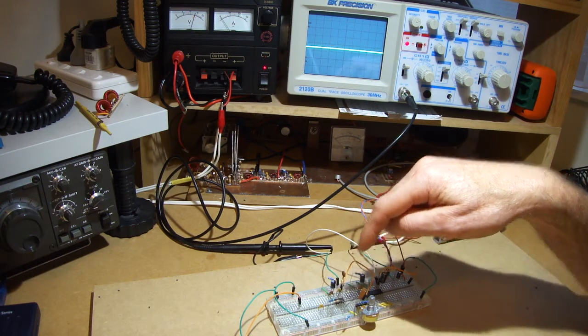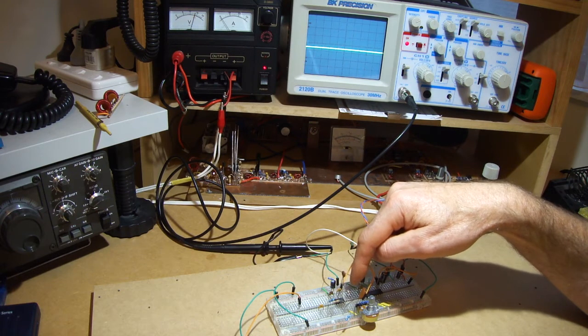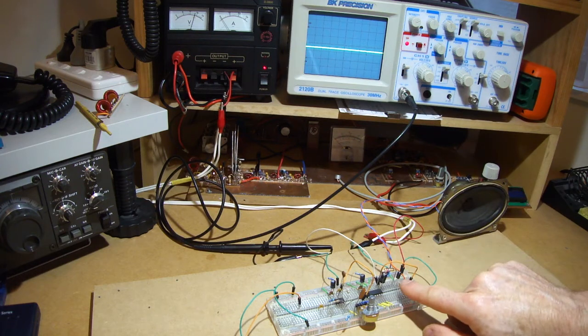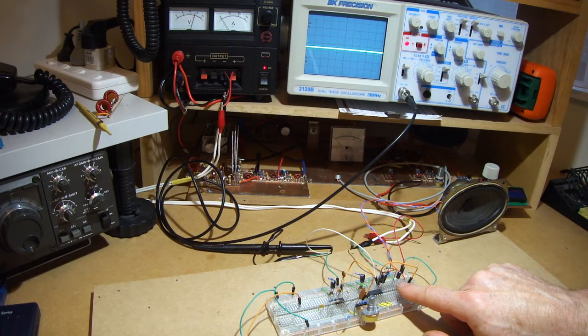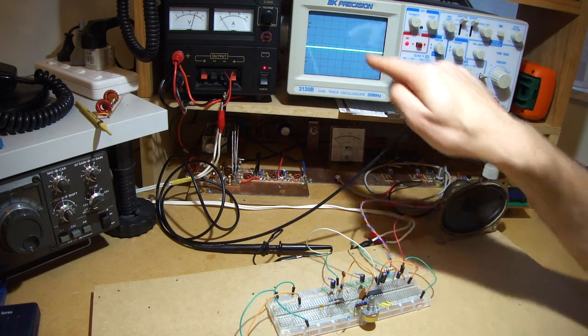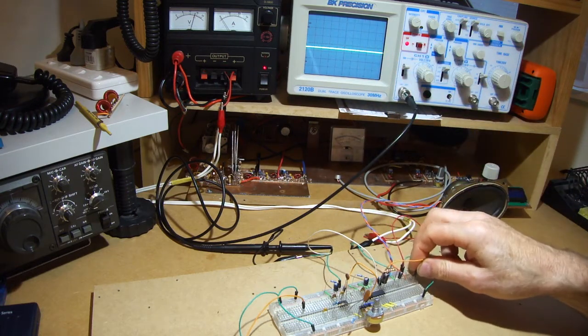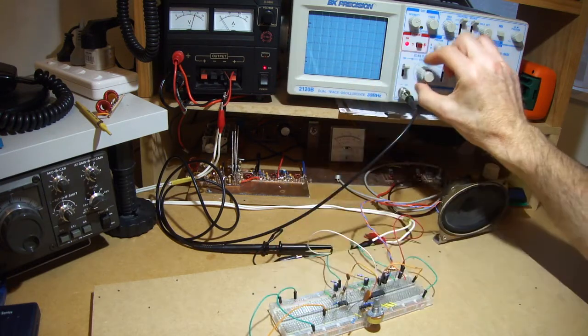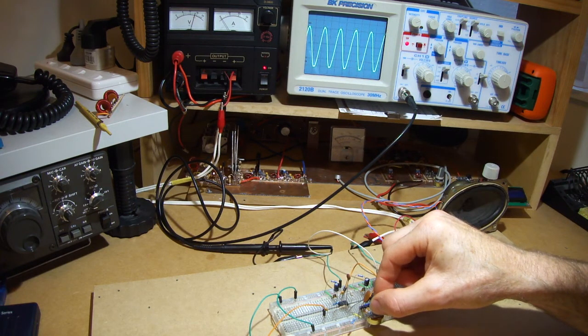So quite an effective, that one nanofarad capacitor sitting across that 47k ohm resistor. I won't demonstrate disconnecting that small 2.7 ohm resistor with the 0.1 microfarad capacitor, but suffice to say at very high volumes, if you were to break that circuit then you start to see that fuzzy noise coming through on the output. Just overdriving it a little bit.